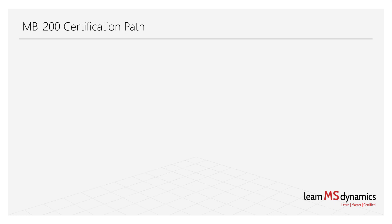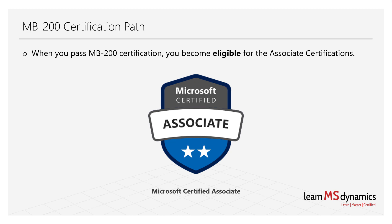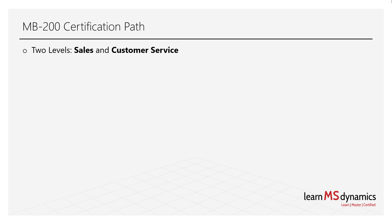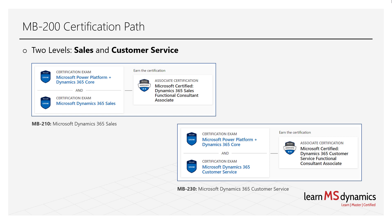Now let's talk about the certification path. When you pass MB200, you become eligible for associate-level certifications. Associate certification is Microsoft Certified Associate, categorized into two levels: sales and customer service. If you pass MB200, you are eligible to become a Dynamics 365 Sales Functional Consultant Associate — for that, you just need to also pass MB-210, which is Microsoft Dynamics 365 Sales. And if along with MB200 you pass MB-230, which is Microsoft Dynamics 365 Customer Service, you become a Dynamics 365 Customer Service Functional Consultant Associate.